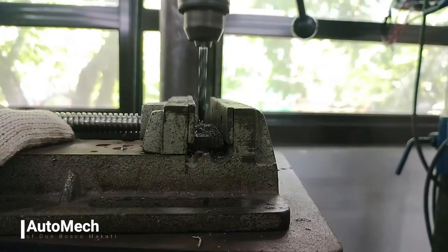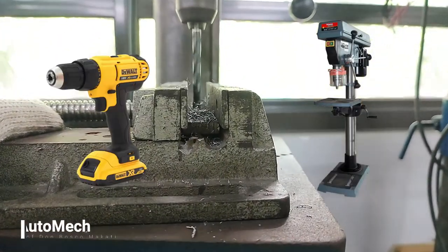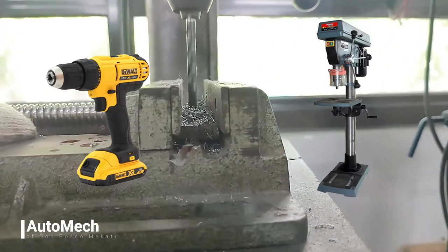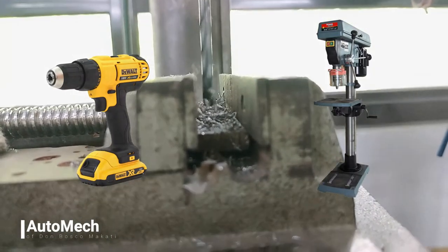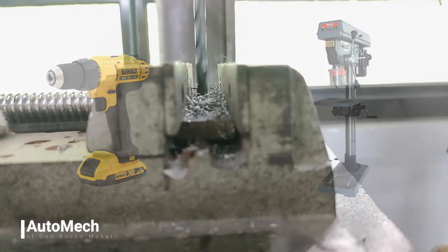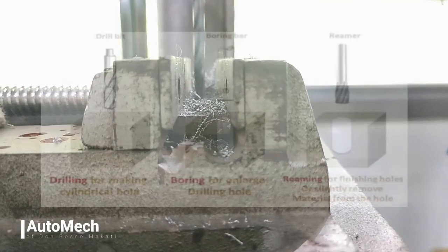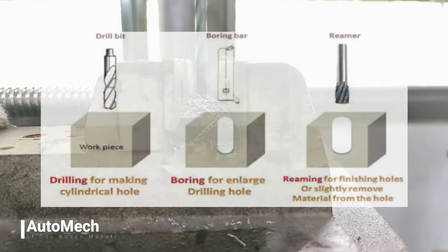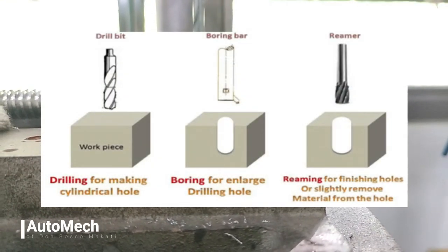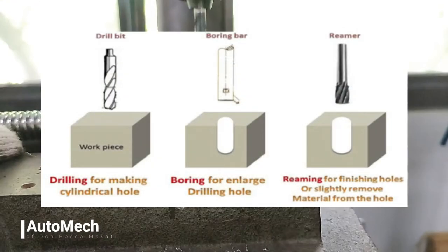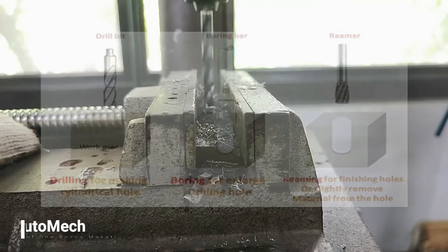That drill may either be a drill press or a portable drill. These drilling machines may perform operations such as drilling for making cylindrical holes, boring for enlarging a drilled hole, and reaming for finishing holes.